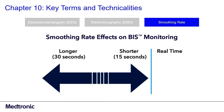By choosing the optimal smoothing rate, you can decrease variability, decrease delay, more easily discern general case trends, increase responsiveness to state, decrease sensitivity to artifacts, and better assimilate the impact of bolus administrations.